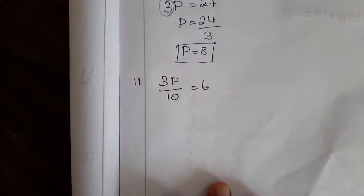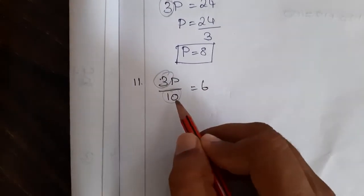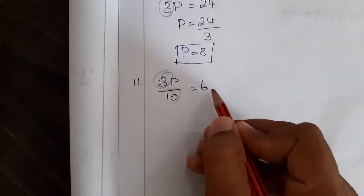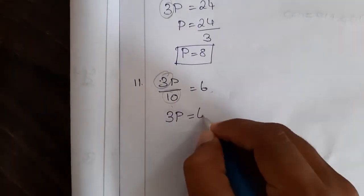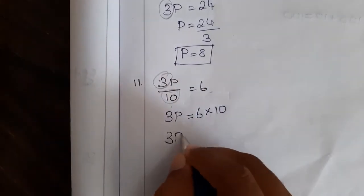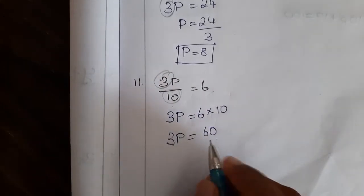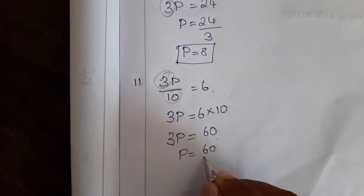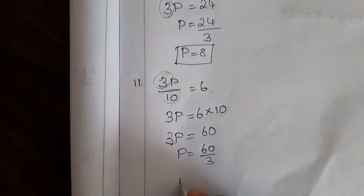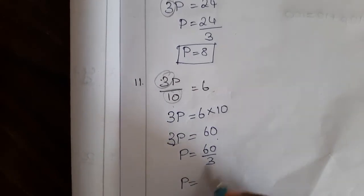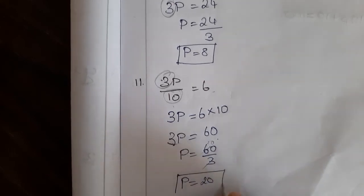Next: 3p by 10 is equal to 6. Same as the previous problem — p is multiplied by 3 and also divided by 10. First let me solve for the division. If you take division to the next side, it will become multiplication. So 3p is equal to 6 into 10, which is 60. The p is multiplied with 3, so let me divide — it will become p is equal to 60 divided by 3. We can simplify: 3 into 20 is 60. So the value of p is 20.